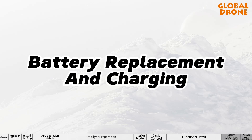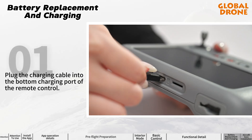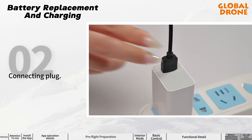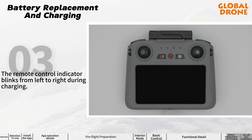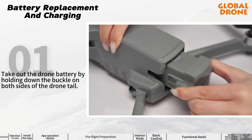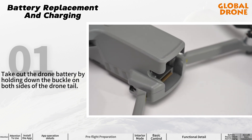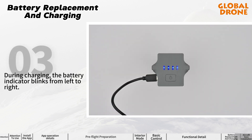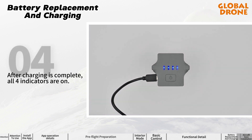Battery replacement and charging: plug the charging cable into the bottom charging port of the remote control. The remote control indicator blinks from left to right during charging; after charging is completed, all four indicators are on. To charge the drone battery, hold down the buckle on both sides of the drone tail to remove it, then plug the charging cable into the drone battery charging port. During charging, the battery indicator blinks from left to right; after charging is completed, all four indicators are on.